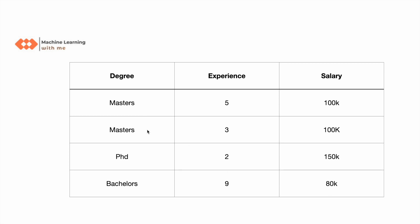Looking at Masters, PhD, and Bachelors, the one with a PhD has the highest salary. So by starting our tree with degree as the root node, we can simply solve this decision tree problem. As the randomness of categories decreases, there is a decrease in entropy. Entropy is simply the randomness of data in a particular column, and lower entropy means higher information gain.